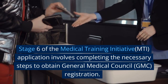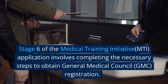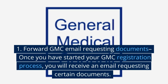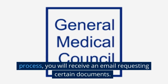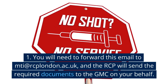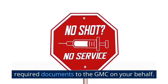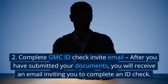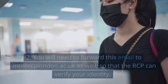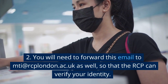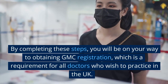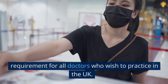Stage 6 of the MTI application involves completing the necessary steps to obtain General Medical Council (GMC) registration. First, forward the GMC email requesting documents: once you have started your GMC registration process, you will receive an email requesting certain documents. You will need to forward this email to mti@rcplondon.ac.uk, and the RCP will send the required documents to the GMC on your behalf. Second, complete the GMC ID Check Invite Email: after submitting your documents, you will receive an email inviting you to complete an ID check. You will need to forward this email to mti@rcplondon.ac.uk as well, so that the RCP can verify your identity.